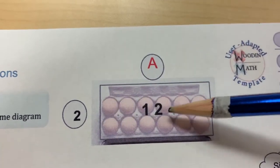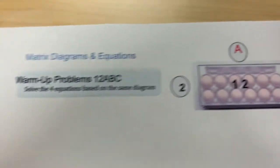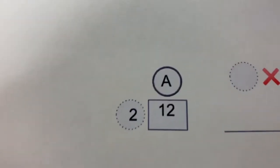A times 2 is equal to 12, 12 divided by 2 is equal to A. Let's take this, think of that as a diagram, here it is.